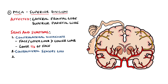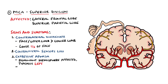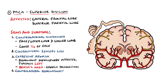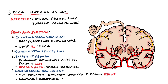If the stroke involves the dominant hemisphere, which is usually the left side, then an expressive aphasia may be seen, as Broca's area is found on the dominant side and is responsible for the production of speech. If the stroke is on the non-dominant side, then we see a contralateral hemi-neglect, where the patient may be unaware or unresponsive to stimuli on one side, which may include not being able to recognize their own limbs.